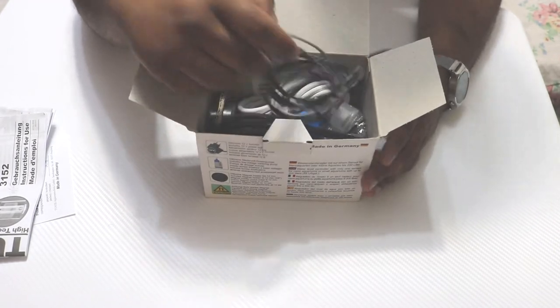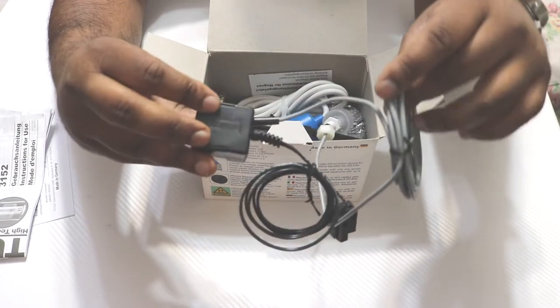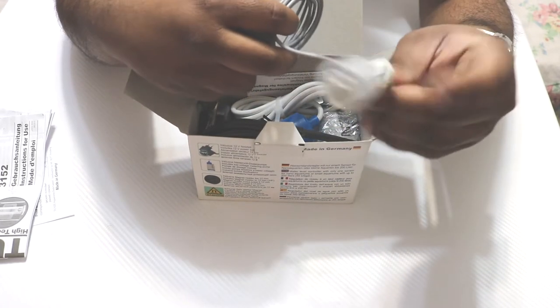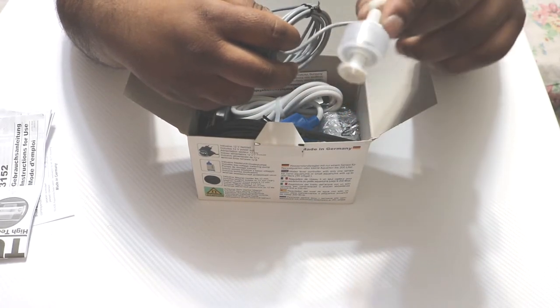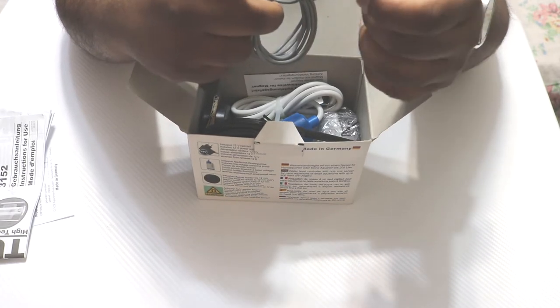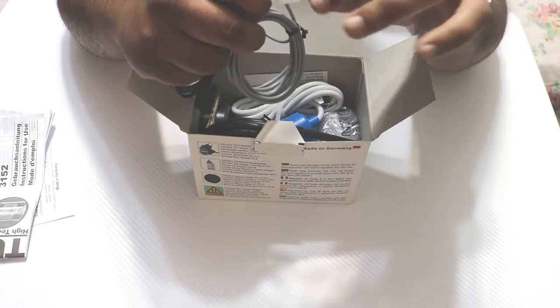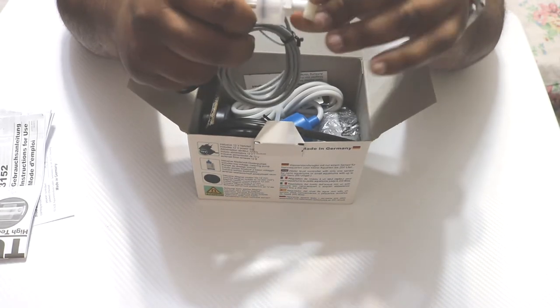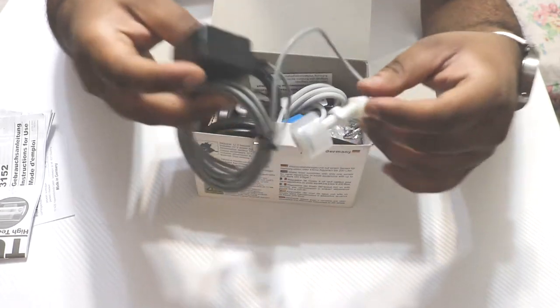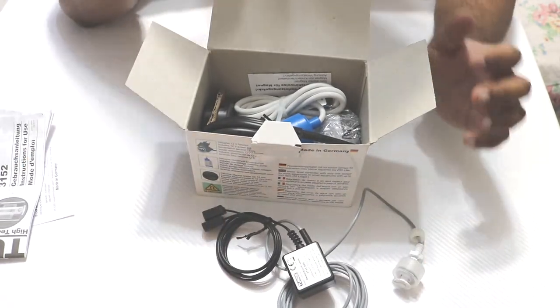So first thing first, this looks like the controller module and the water sensor, the height sensor. It's a float switch type. So that's that. It's got a little screw on it. We'll do that later. Put that down up front and see what else we get.